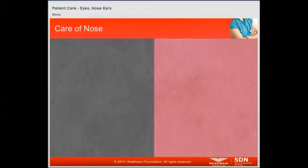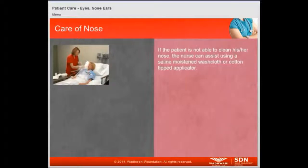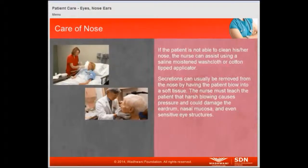Let us now understand how to take care of a patient's nose. If the patient is not able to clean his or her nose, the nurse can assist using a saline moistened washcloth or cotton tipped applicator. Secretions can usually be removed by having the patient blow into a soft tissue. The nurse must teach the patient that harsh blowing causes pressure and could damage the eardrum, nasal mucosa, or even sensitive eye structures.